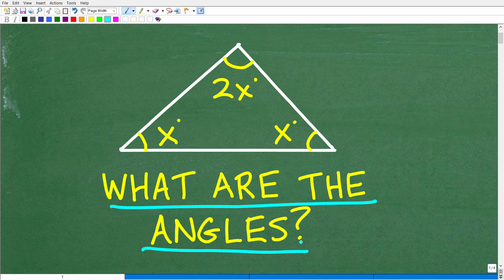So let's take a look at this figure. Obviously we have a triangle, and this angle of the triangle is x degrees. And this angle over here is the same angle, it's x degrees. And this angle right here is 2x degrees. Again, the question is, what are the actual angles of this triangle?